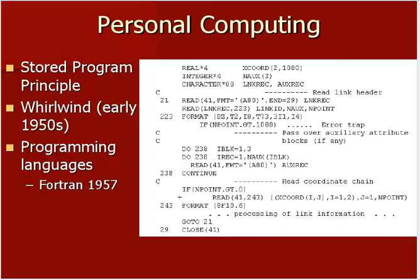What you see in the 1950s is the development of the first programming languages. The first real programming language was Fortran, written in 1957. If you look at the Fortran example I have here, there are structural qualities very similar to HTML and CSS. Fortran was a coded language that used symbols and various rules to program computer operations — it's really the forerunner of HTML, CSS, Java, and all these different programs.